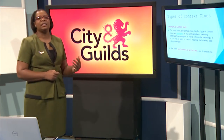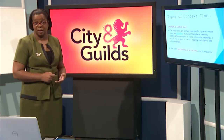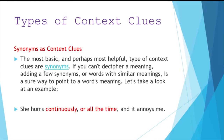Now there are different types of context clues. The author can give you context clues in many, many different ways. We can use synonyms as context clues — and you remember what synonyms are, right? Words that are similar in meaning.